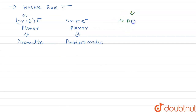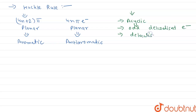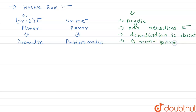A compound is non-aromatic if it is acyclic, or if it is a cyclic compound with odd delocalized electrons. If a compound is cyclic and follows Hückel's rule but does not have delocalization of electrons, then delocalization is absent. Additionally, if a compound is cyclic with delocalization but has a non-planar system, it is also considered non-aromatic.